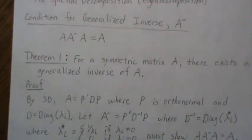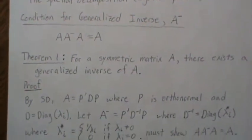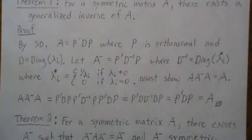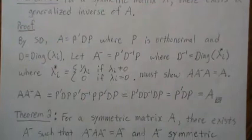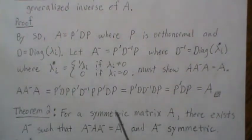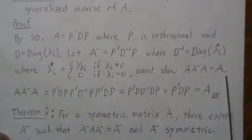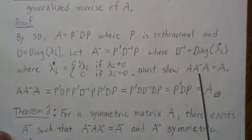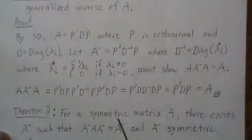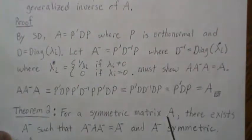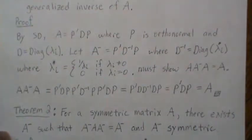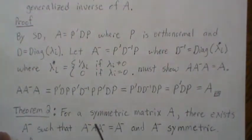Notice that A A-dash A = A is the only property required for a generalized inverse, but here for a symmetric matrix we're also proposing that the additional property A-dash A A-dash = A-dash holds, which makes the generalized inverse reflexive. Furthermore, the generalized inverse itself is symmetric.